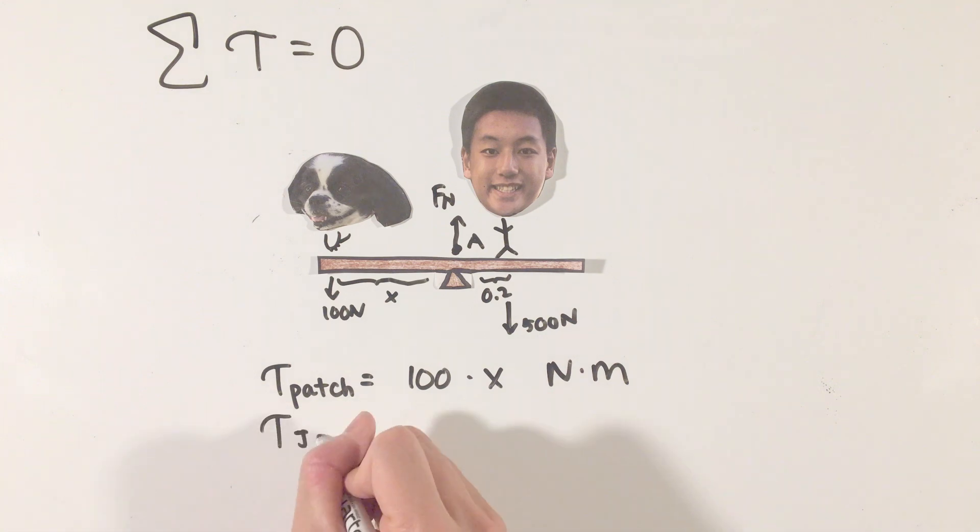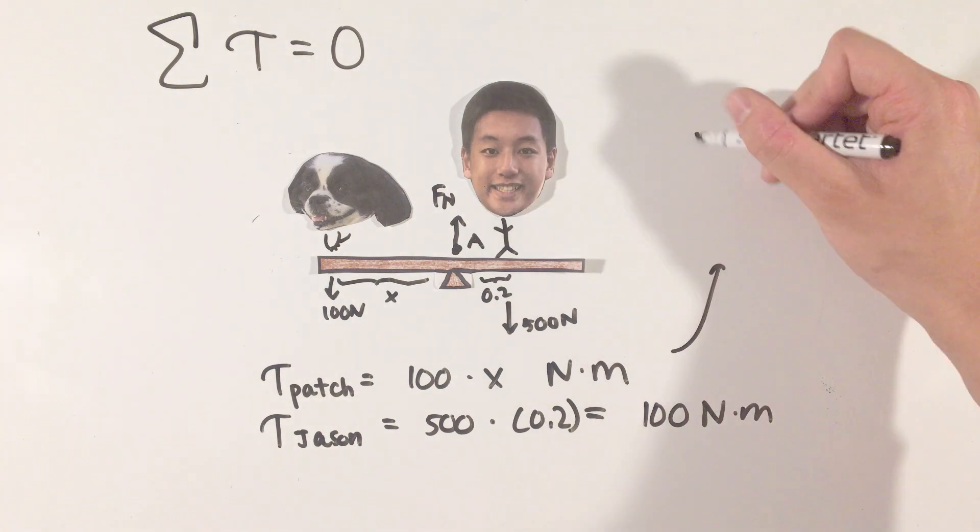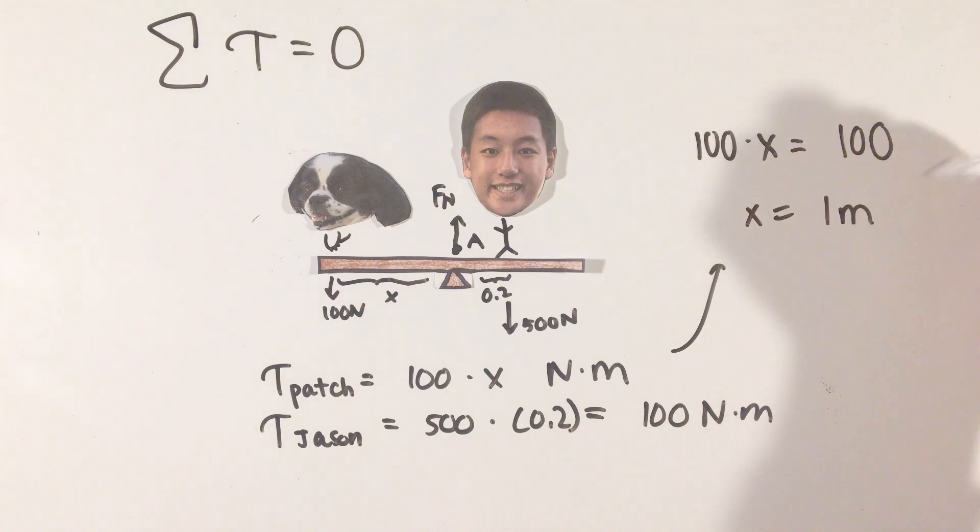Jason, on the other hand, will apply a torque of 500 times 0.2 newton meters that attempts to rotate it clockwise. Equating these two quantities, we'll find that Patch must be one meter away from the fulcrum to balance a seesaw.